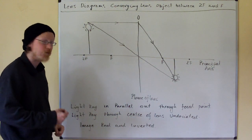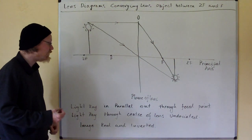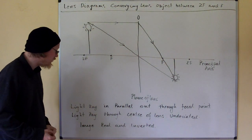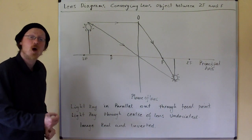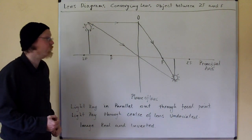So, light ray in parallel out through focal point. Light ray through centre of lens undeviated. Image real and inverted. For the converging lens, object between twice the focal point and the focal point.